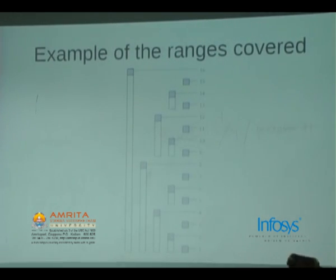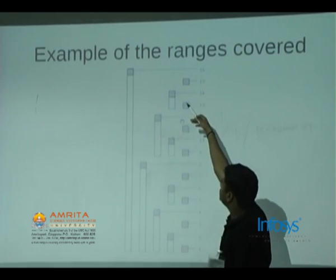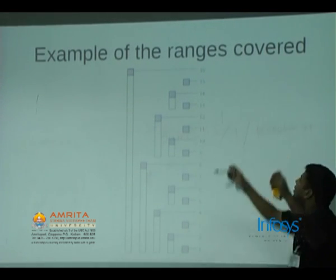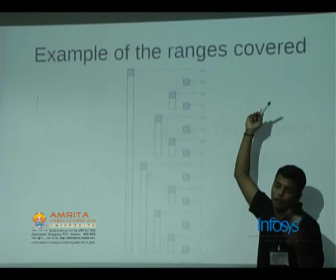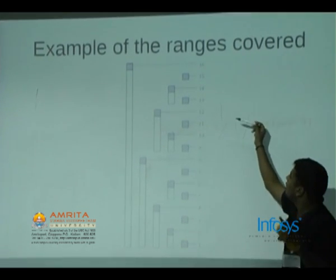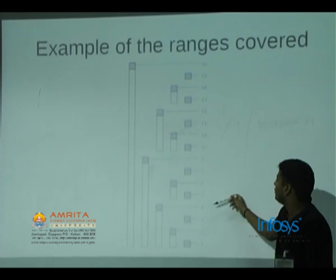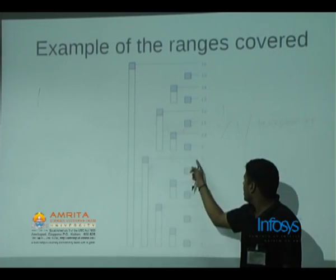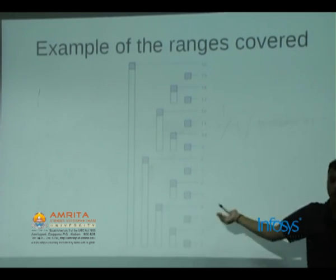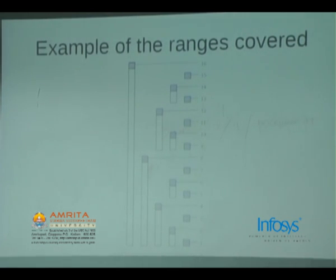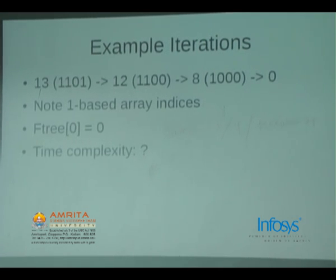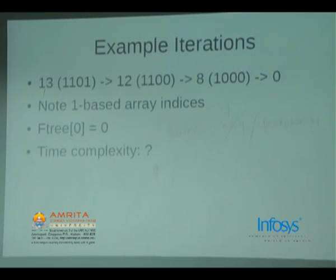This is just a diagram showing the range each index covers. For example, 16 covers all 16 elements since lowbit(16) = 16. 15 is odd so lowbit(15) = 1 — it just covers itself. 14 covers 2 elements. 6 covers 6 and 5. 4 again covers 4 elements completely. Each odd number covers only itself. The iteration for a Fenwick tree query is: you just remove the low bit at each step.